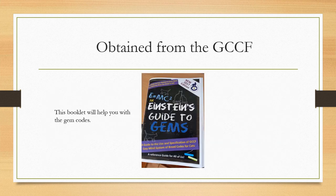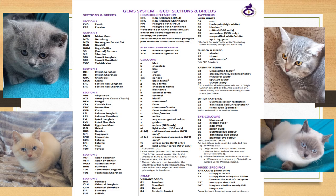This is a book you can obtain from the GCCF. It will help you with gem codes, patterns, and pictures — I've used it loads of times. This is the gem code system: these are the colours, these are the patterns. Remember the eye colours and remember to put your breed numbers in first.